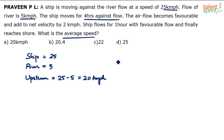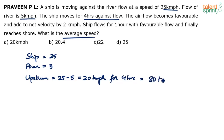The ship moves at 20 kilometers per hour for 4 hours. So what is the distance covered? 20 into 4 equals 80 kilometers.